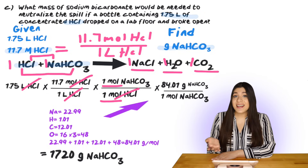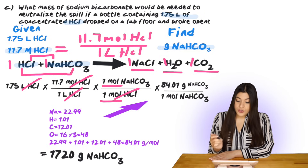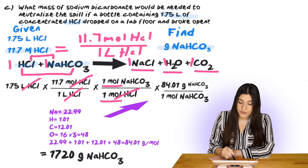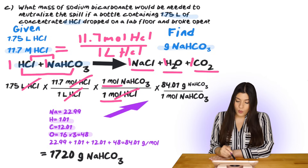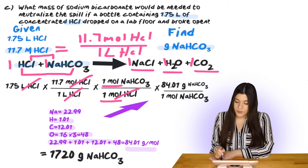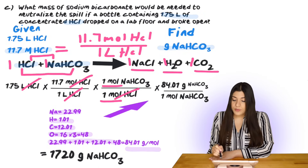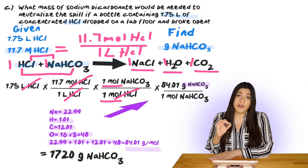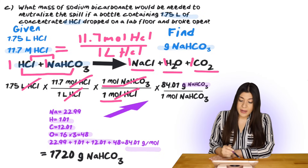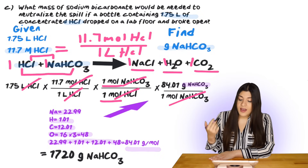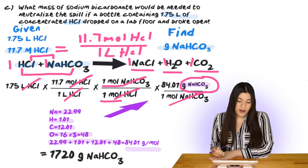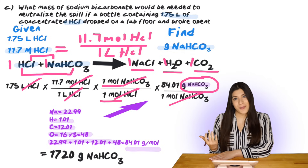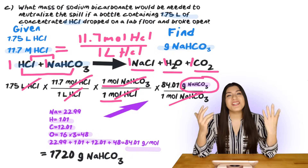We need the molar mass of sodium bicarbonate (NaHCO₃). Sodium is 22.99, hydrogen is 1.01, carbon is 12.01, and oxygen is 16 — but there are three oxygens, so 16 × 3 = 48. Adding everything together gives a molar mass of 84.01 grams per mole. We place grams on top and moles of sodium bicarbonate on the bottom so they cancel. Multiplying straight across gives us 1,720 grams of sodium bicarbonate — our final answer for this complete solution stoichiometry example.